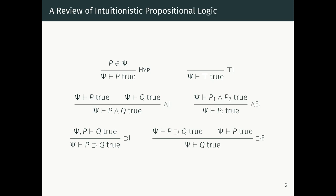Let's go back to intuitionistic propositional logic from the beginning of the course. We have the judgment that P is true under some set of assumptions psi. If P is in psi, then P is true because we assumed it. True can always be judged to be true. We can judge P and Q to be true if we can judge both P and Q to be true. If P1 and P2 is true, then we can prove either P1 or P2 to be true. To prove an implication P implies Q, we assume P and then prove Q. To use an implication, if you can prove P implies Q and also prove P holds, then you have a proof that Q holds.